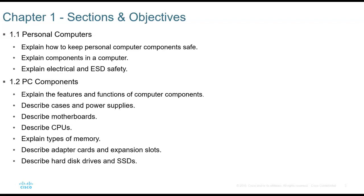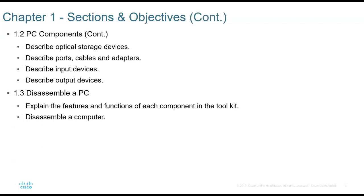Next we'll look at PC components — features and functions, cases and power supplies, motherboards, CPUs, different types of memory, adapter cards that fit into expansion slots, hard disk drives, solid-state drives, optical storage devices, ports, cables, adapters, and input/output devices. The chapter concludes with a PC disassembly lab.